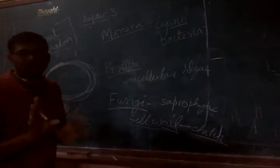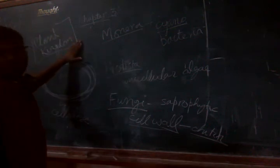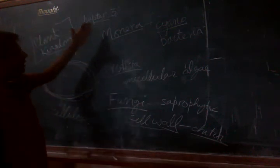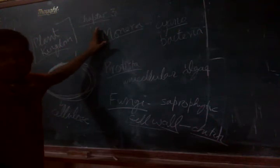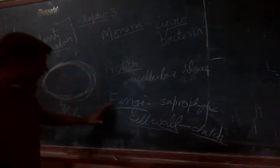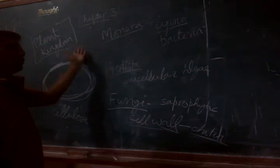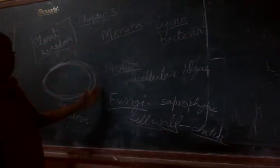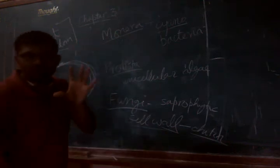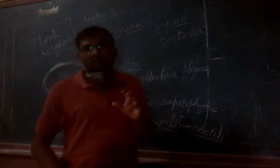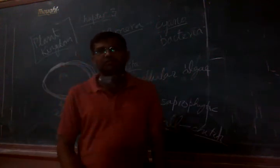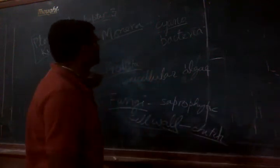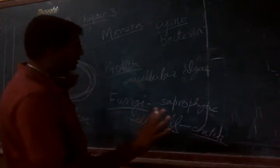So in this case we have seen that the classification of the plant kingdom has never been a static classification — it has been very dynamic, and many organisms have been moved in and out. According to our present understanding, where the five-kingdom classification given by R.H. Whittaker is most accepted, many of the old members of kingdom Plantae are now included in other kingdoms.